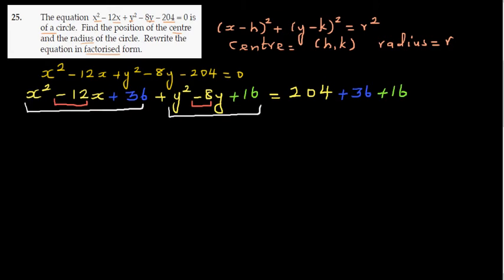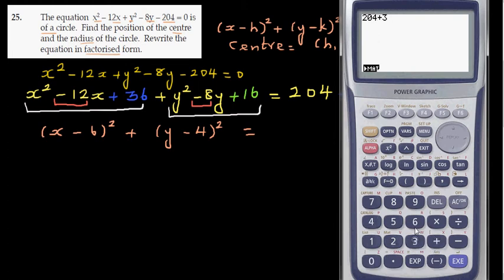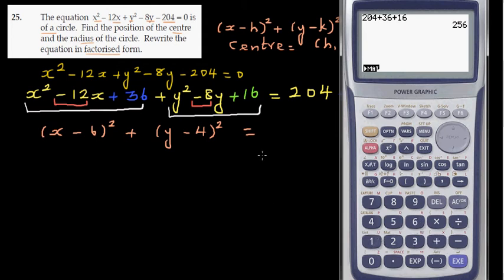This perfect square is x minus 6, the whole squared, plus y minus 4, the whole squared, equals — let me use my calculator — 204 plus 36 plus 16, which is 256. And 256 is 16 squared. So the factorized form is x minus 6 whole squared plus y minus 4 whole squared equals 16 squared.